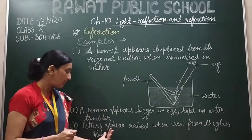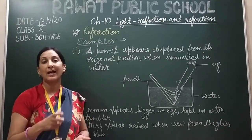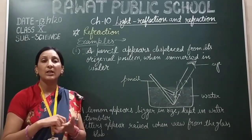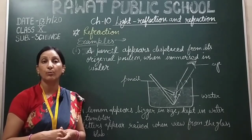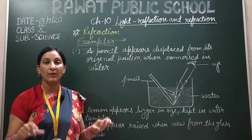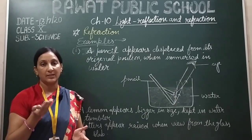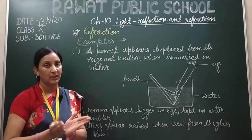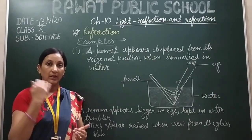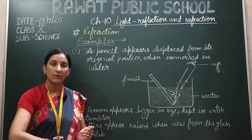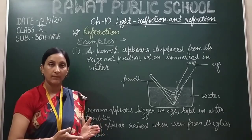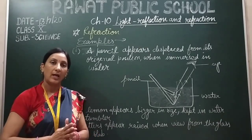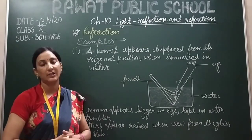For the same reason, when we put a glass slab on a written page — something written in a book or notebook — it appears to be raised above its actual position. The glass slab is the denser medium and air is the rarer medium. When the light coming from the words travels from the denser medium to the rarer medium, it bends away from the normal, and the light appears to come from a different direction, which is why the text appears raised.